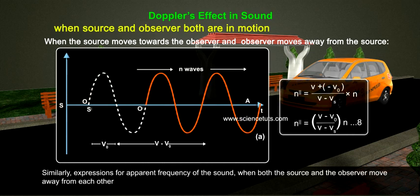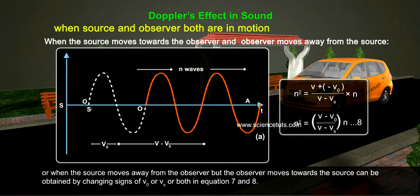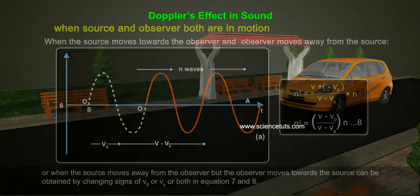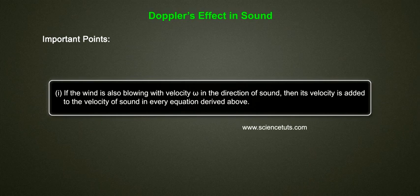Similarly, expressions for apparent frequency when both the source and observer move away from each other, or when the source moves away but the observer moves towards the source, can be obtained by changing the signs of v₀, vs, or both in Equations 7 and 8.